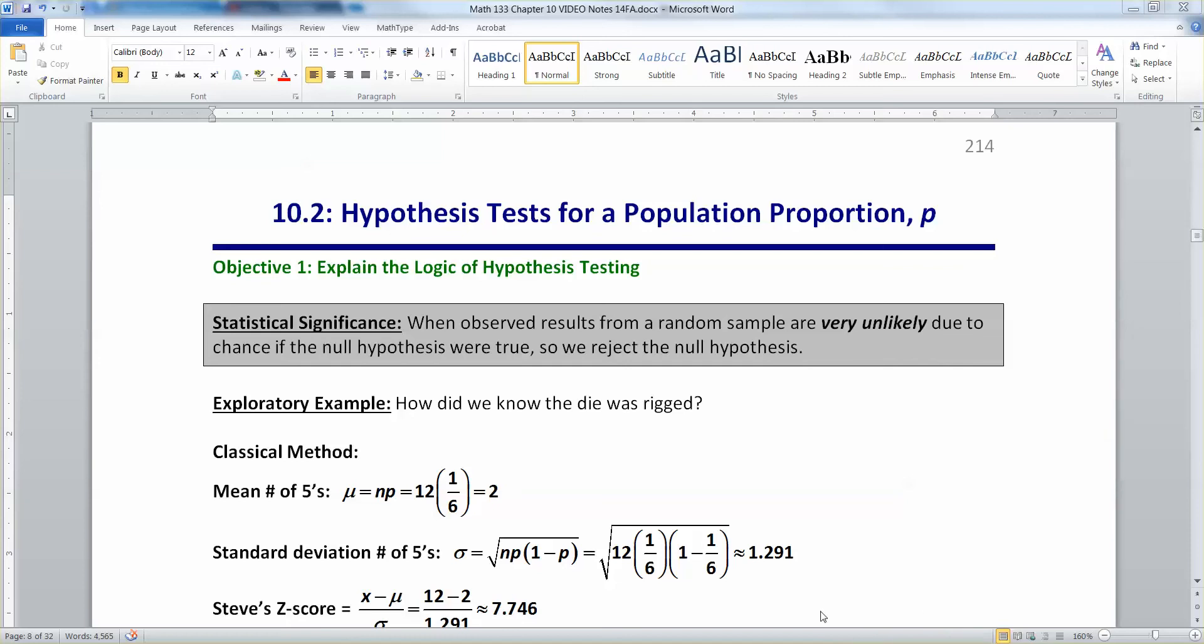Let's first remind ourselves of a few different things. First off, statistical significance. What does that mean when we ask if something is statistically significant or not? It means that the observed results from a random sample are very unlikely due to chance if the null hypothesis were true, so we reject the null hypothesis. Statistically significant means you want to reject the null hypothesis.